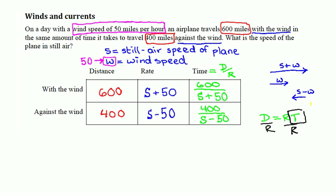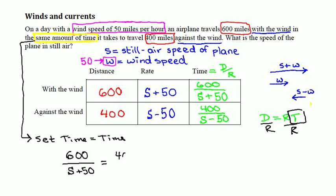Now that our table is filled in, we're ready to make the equation, and this is where the part of the word problem that refers to the times becomes relevant. This says same amount of time. That means that in order to set up my equation, I should set the times equal to each other. Or set time 1 equal to time 2. We'll just call this set time equal to time. So that means 600 divided by s plus 50 equals 400 divided by s minus 50 is my equation. Time of the plane going with the wind equals time of the plane going against the wind.